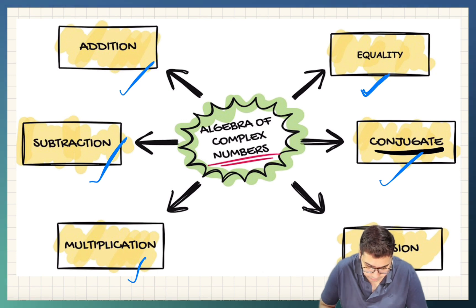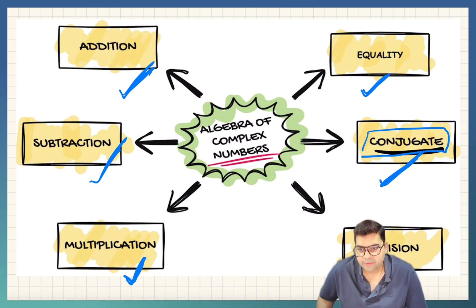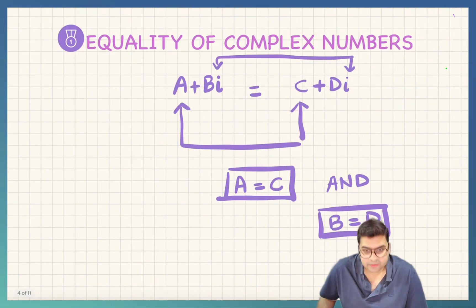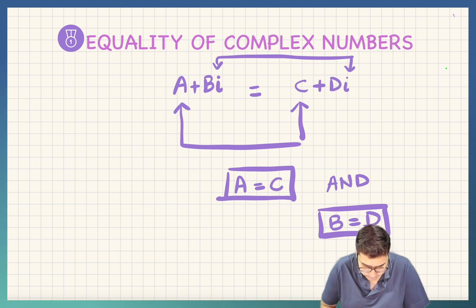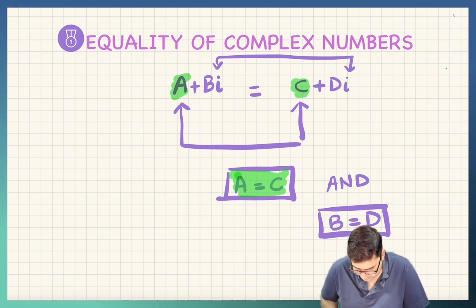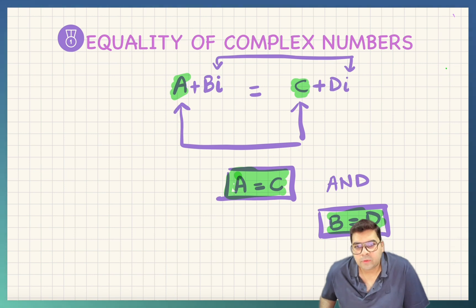You can equate them, add them, subtract them. There is multiplication possible between complex numbers, you can divide two complex numbers, and there is one new concept related to conjugate. Now let us begin with the first one — the equality of complex numbers. Two complex numbers a plus bi and c plus di are equal if their real parts are equal and their imaginary parts are equal. So a must equal c and b must equal d. If two complex numbers are equal, just equate their real parts and imaginary parts and you will get two equations every time.